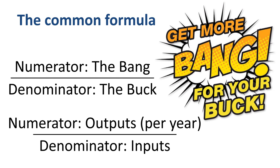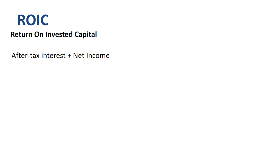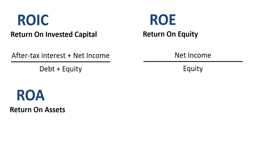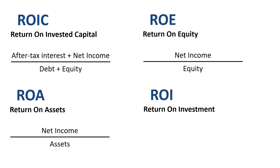If I invest $1, how much annual return is being generated on that investment? ROIC is calculated as the sum of after-tax interest expense plus net income, divided by the sum of debt plus equity. ROE is calculated as net income divided by equity. ROA is calculated as net income divided by assets. ROI is calculated as benefits or returns divided by investment.